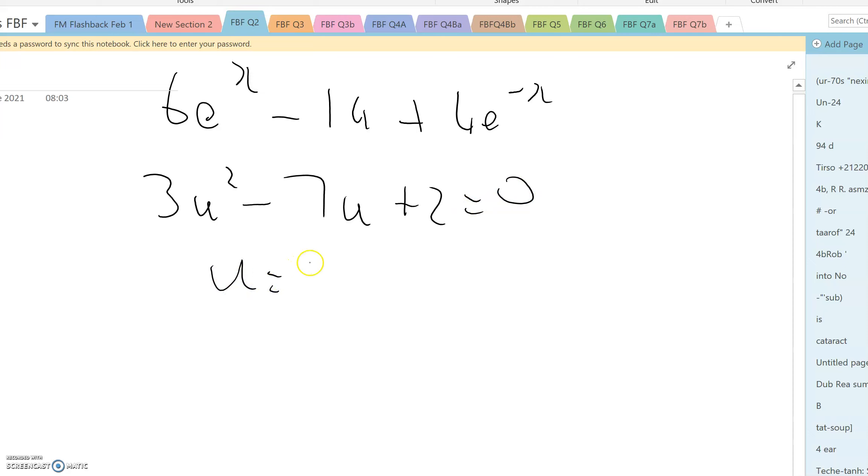Solving the quadratic equation gives you u equals 1 third or 2, which is the same as e to the x. If we want to find out what x is, we just take natural logarithms. x is logarithm of 1 third or logarithm of 2.